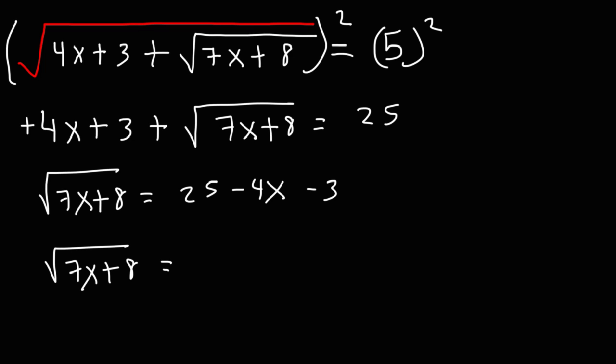Now the next thing we could do is combine like terms. 25 minus 3 is equal to 22. So we have 22 minus 4x on the right side of the equation.